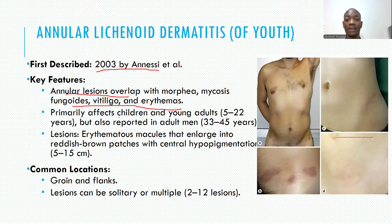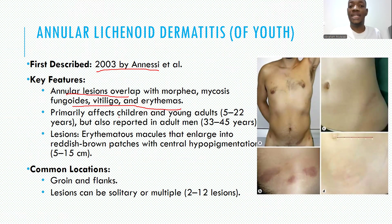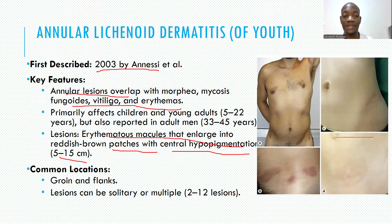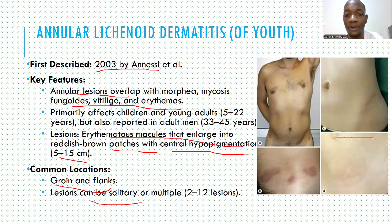It primarily affects children and young adults, with a peak age of about 5 to 22 years, but has also been reported in adult males aged 35 to 45 years. The lesions are erythematous macules that enlarge into reddish-brown patches with central hypopigmentation, varying in size from about 5 to 15 centimeters in diameter.